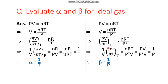To find beta, we multiply del V by del P_T by minus one over V. The negative signs cancel, giving nRT/(P²V). For an ideal gas, nRT = PV, so substituting: PV/(P²V), and PV in the numerator cancels with PV in the denominator, leaving only 1/P. So the value of beta for an ideal gas is 1/P.